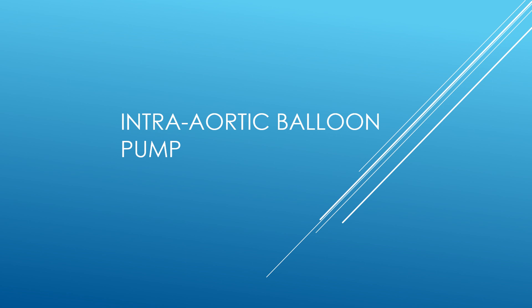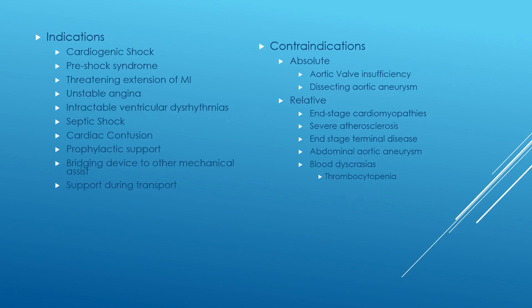Intra-aortic balloon pump is a device which helps in improving the cardiac output. Its indications are cardiogenic shock, shock syndrome, threatening extensions of MI, unstable angina, intractable ventricular dysrhythmia, septic shock, cardiac confusion, prophylactic support, and bridging devices to other mechanical assist devices and support during transportation.